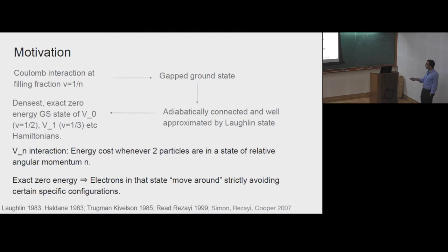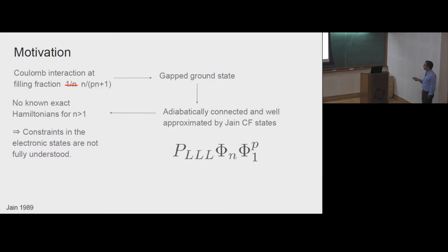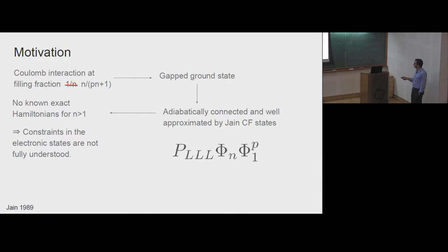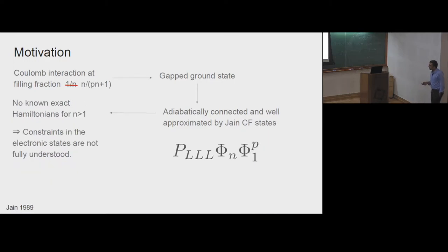The Laughlin states form exact zero-energy states of this Hamiltonian, implying that the electrons in the Laughlin state strictly avoid certain specific configurations. If you look at the Coulomb interaction spectrum at filling fraction n over pn+1, there is a gapped ground state which is adiabatically connected and well approximated by the Jain CF state. Except for the specific case where n equals 1, in which case these states become equivalent to the Laughlin state, you don't get an exact Hamiltonian similar to the ones discussed. This implies that the constraints in these electronic states are not fully understood.